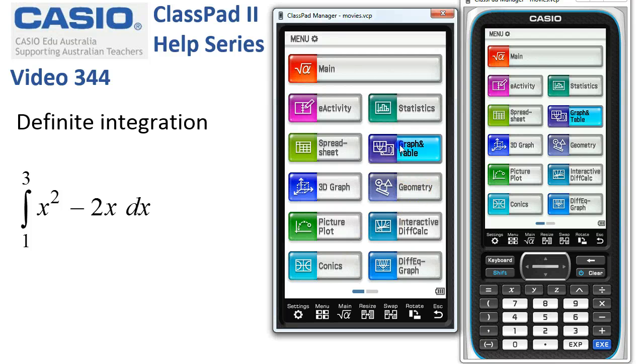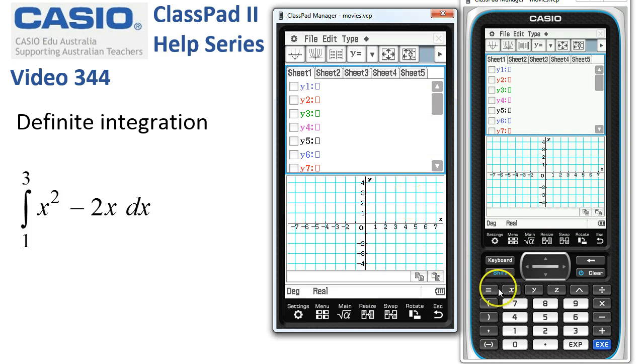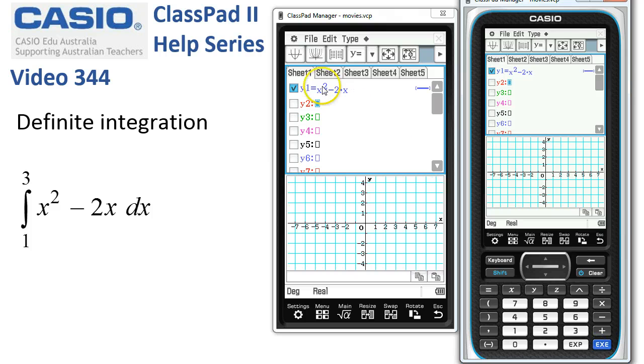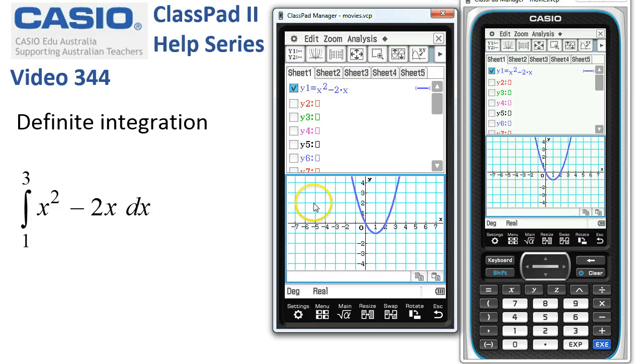Definite integration. We'll start in graph and table here, and the function we want is x squared minus 2x. I'll tap execute to select it and draw the graph of this function. There it is.